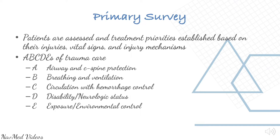In the primary survey, patients are assessed and treated simultaneously. Priorities are established based on their injuries, vital signs, and injury mechanisms. A is for airway and C-spine protection, B for breathing, C for circulation, D for disability, and E for exposure.